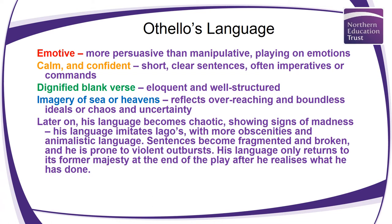He often refers to imagery of sea or heavens, reflecting his overreaching or boundless ideals — big-picture thinking. But this could also represent later chaos and uncertainty given storms at sea and in the sky. Later his language will become chaotic, showing signs of madness, becoming more and more like Iago's until Act 3 where you can't tell them apart. He'll use more obscenities and animalistic language, his sentences becoming fragmented and broken. The only time it returns to former majesty is at the end — that moment of realisation and catharsis before, spoiler alert, he kills himself.